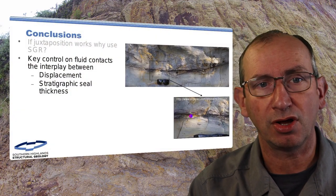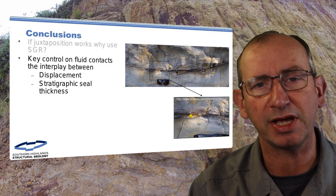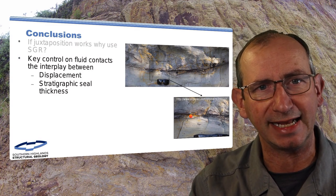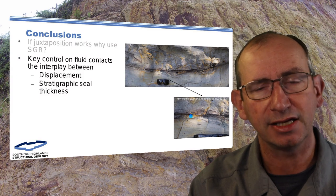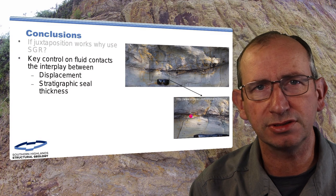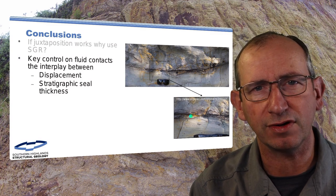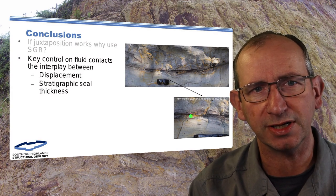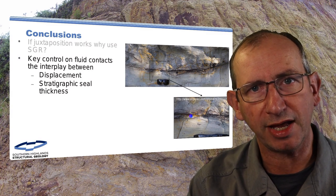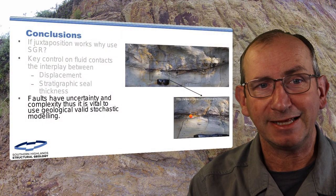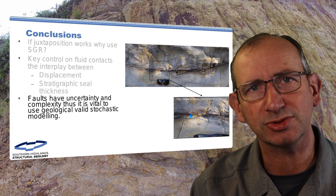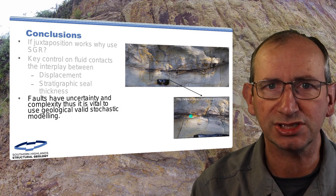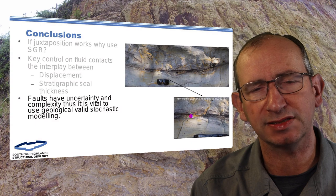The key controls on fluid contacts in the cases we've seen — and we've only done 1,000, I need 10,000 or 50,000 to really say it — are displacement and the stratigraphic seal thickness. Just do a good job. Don't get caught up in esoteric algorithms. Make a good map, make sure it ties with the wells, do good sequence stratigraphy, and make good ALMAP maps. Faults have uncertainty and complexity, and it's vital that we use a stochastic technique — not to make it more complicated, but to understand the uncertainty in your picking, your bias, and the data.